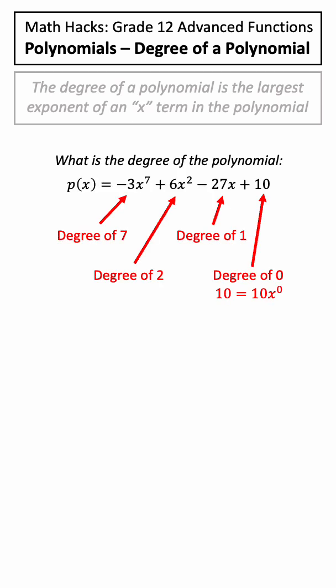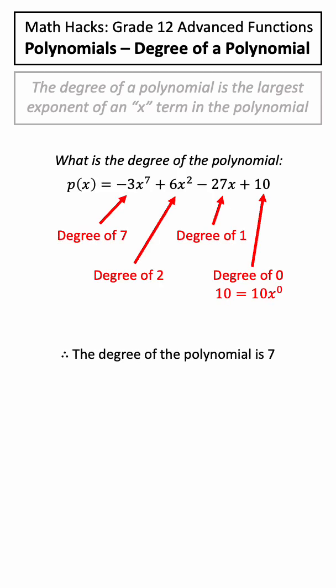So if you look at this example and look at the degree of each term, the overall degree of the polynomial is the largest of these. In this case, that would be 7.